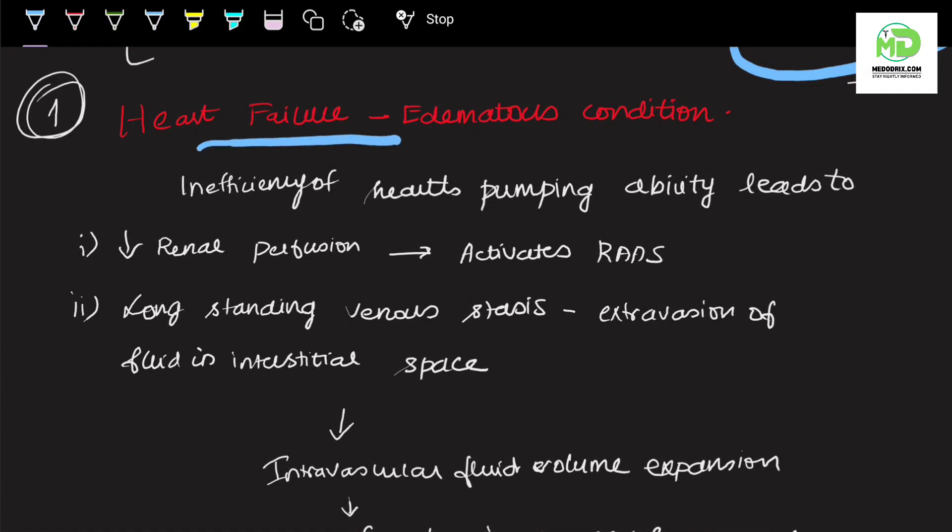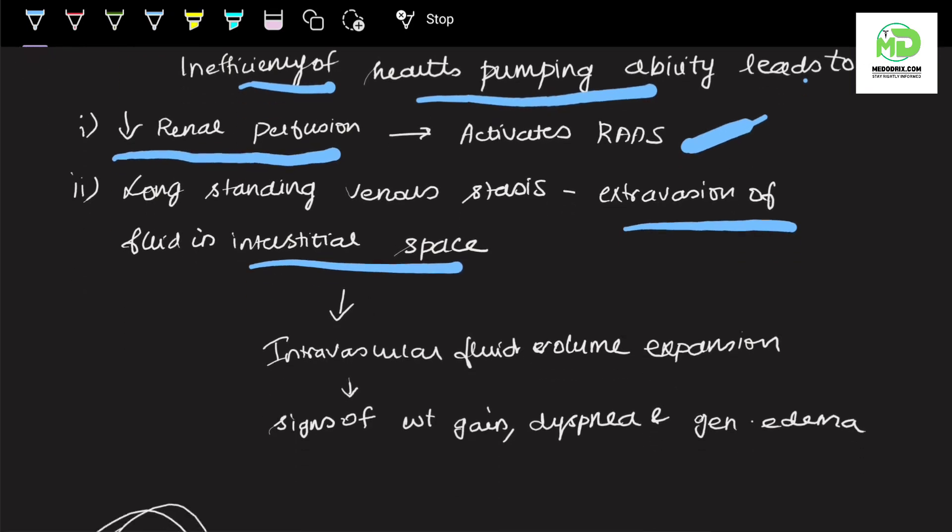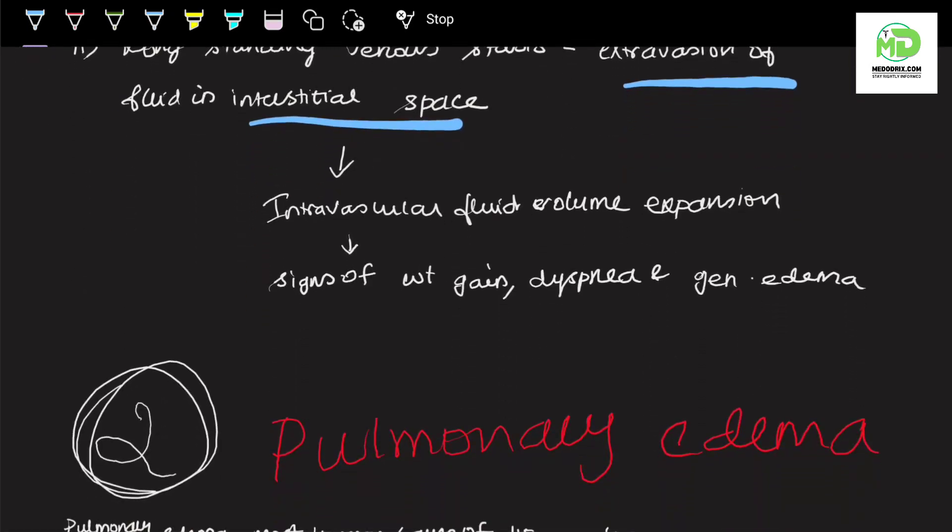The first condition is heart failure, which is an edematous condition. Inefficiency of the heart's pumping ability leads to reduced renal perfusion, which will ultimately activate the renin-angiotensin-aldosterone system to increase blood pressure. Long-standing venous stasis leads to extravasation of fluid into interstitial spaces, and intravascular fluid volume expansion takes place, ultimately causing signs like weight gain, dyspnea, and generalized edema.